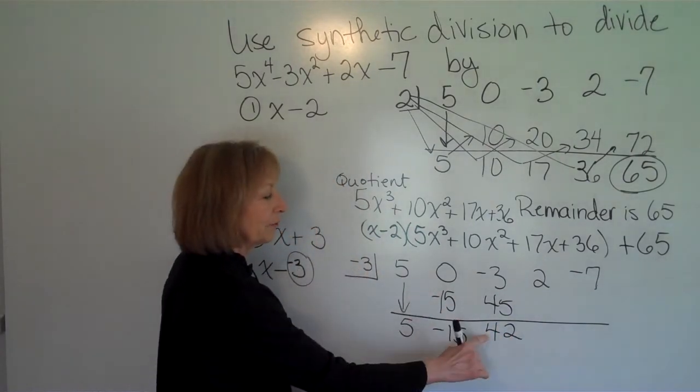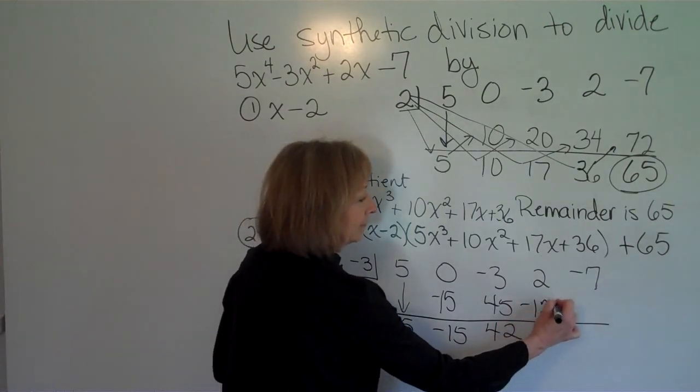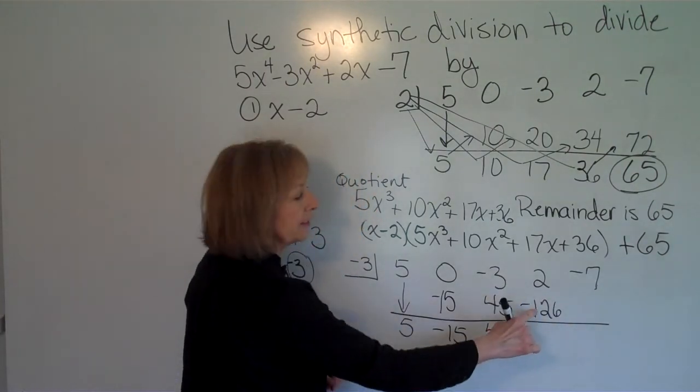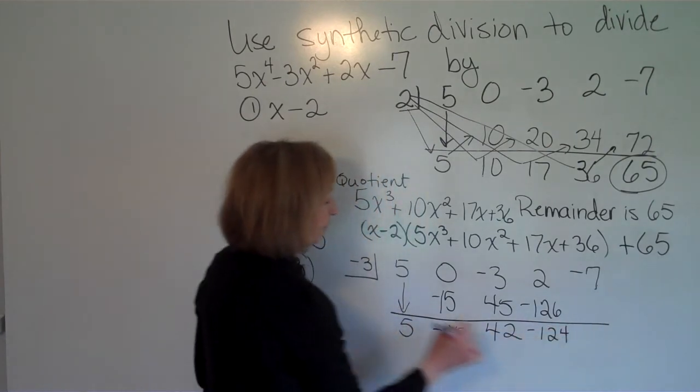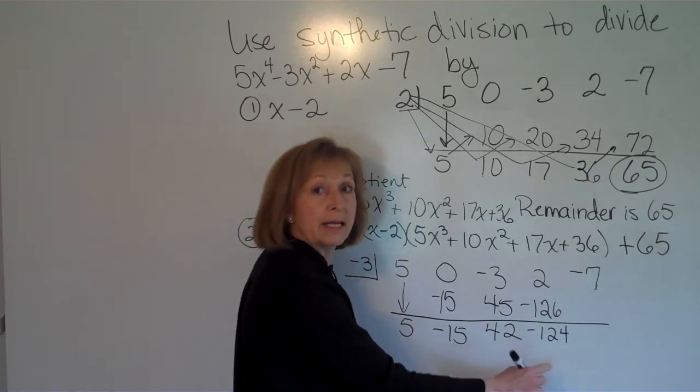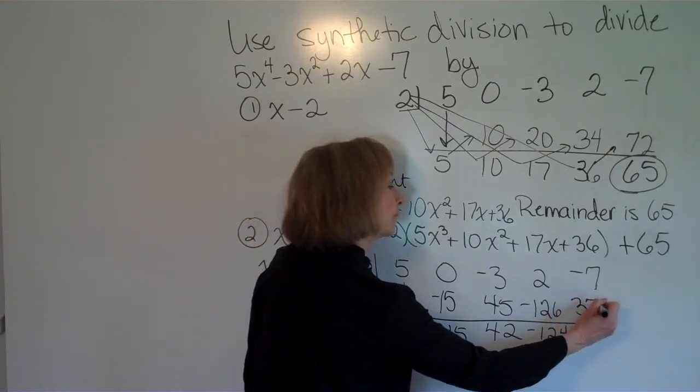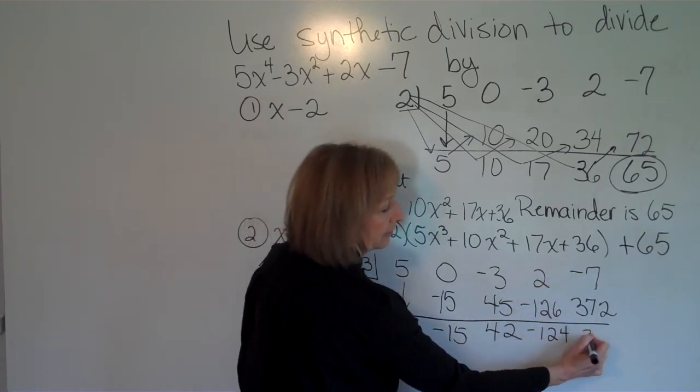Multiply: -3 times 42 is -126. And then we add: 2 plus -126 is -124. And then finally multiply: -3 times -124 is positive 372. And then we add: -7 plus 372 is 365.